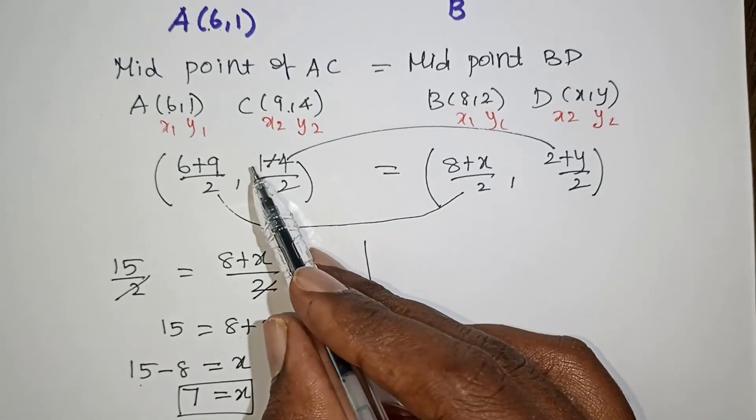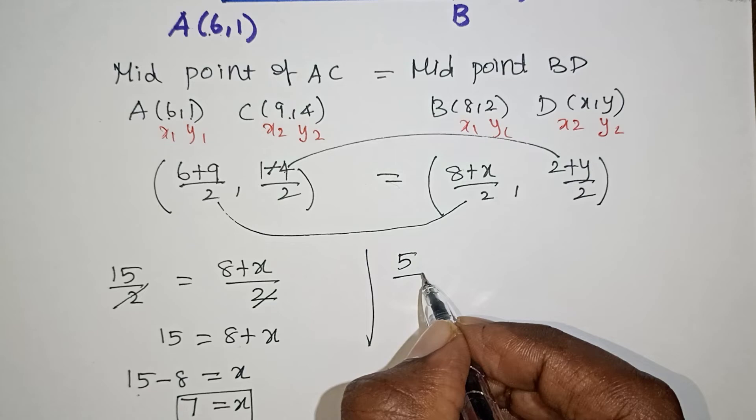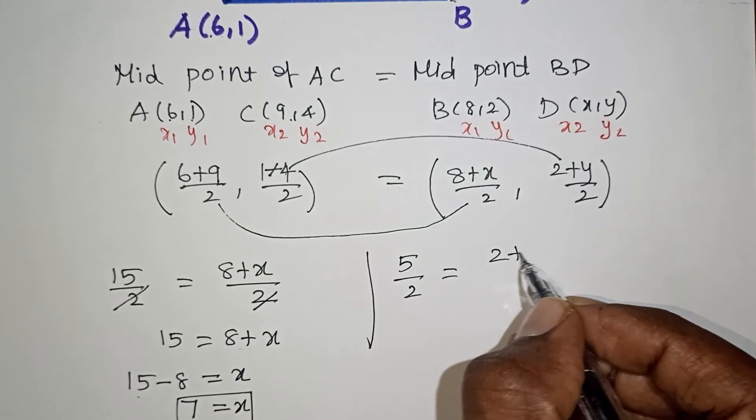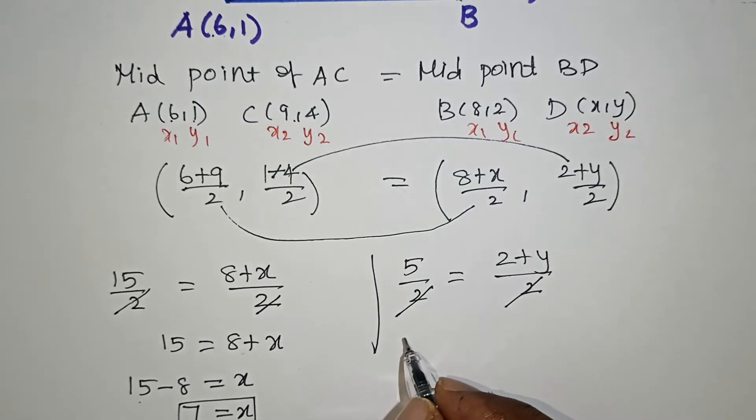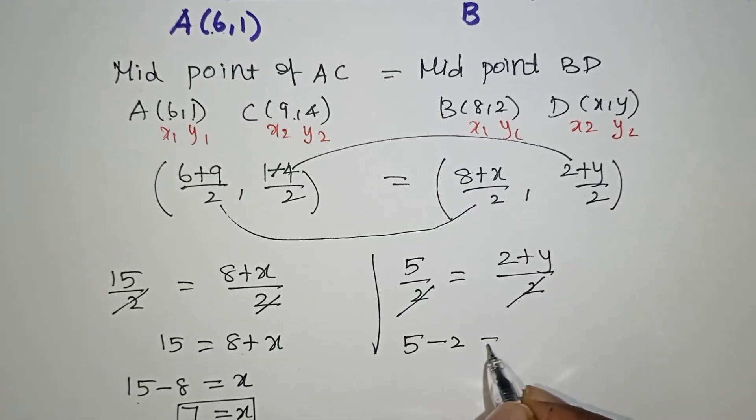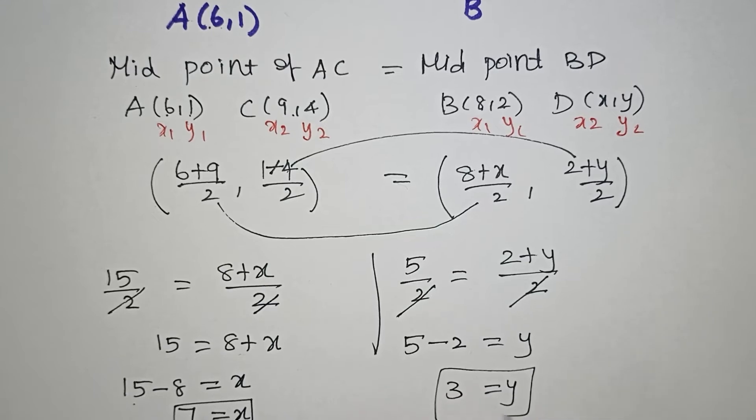Same way for the Y coordinate: 5 by 2 equals 2 plus Y by 2. Canceling the denominators, 5 equals 2 plus Y. So 5 minus 2 equals Y, which gives Y equals 3.